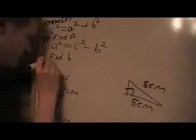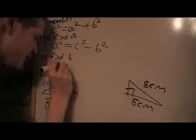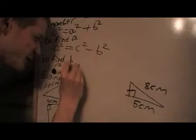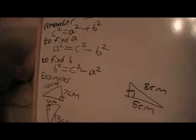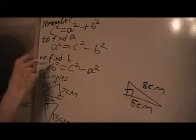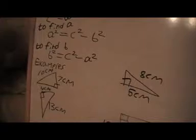And see, if we wanted to find B, it's very similar. We'll do B squared equals C squared minus A squared. Remember, this is finding A squared and B squared. So then, to find the length itself, you have to square root that.